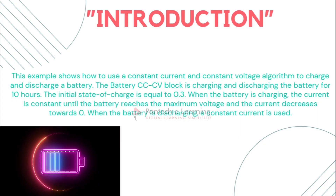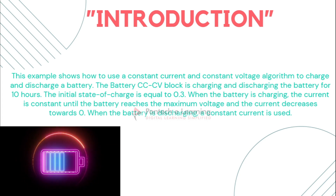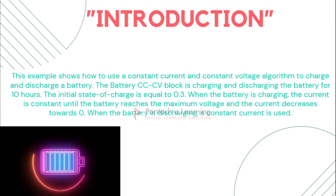First of all, let's see the introduction. In this example, a constant current and constant voltage algorithm is used to charge and discharge the battery. The initial state of charge of the battery is set to 0.0 — that means 30% — which means that the battery is already partially charged before the charging process begins. The charging and discharging process is carried out for a period of 10.5.